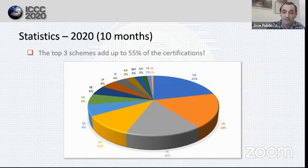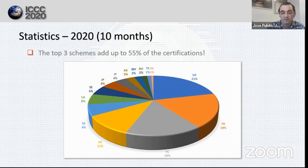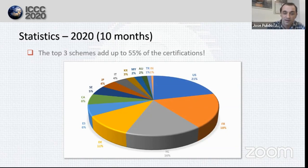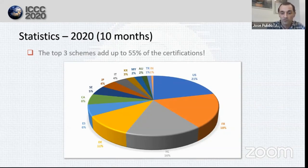In terms of relative numbers, there is one indisputable fact: the top three certifiers in the scheme account for 55% of the total number of certifications. If we add Germany to this group, we are speaking of 66% of the total certifications between only four countries. Spain has been the top five certifier this year, and Sweden and Canada follow closely.